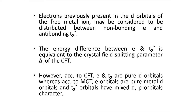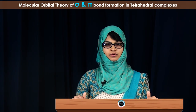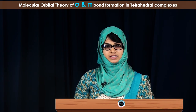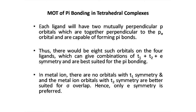The same principles can be applied to pi bond formation in tetrahedral complexes. In the case of pi bond formation, each ligand provides two P-pi orbitals which are perpendicular to each other mutually, and both are perpendicular to the P-sigma orbitals of the metal. Each ligand provides two P-pi orbitals, giving a total of eight P-pi orbitals from the four ligands. From group theory, the symmetries required for pi bond formation are T1, T2, and E.